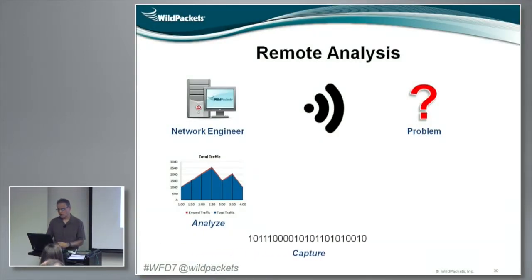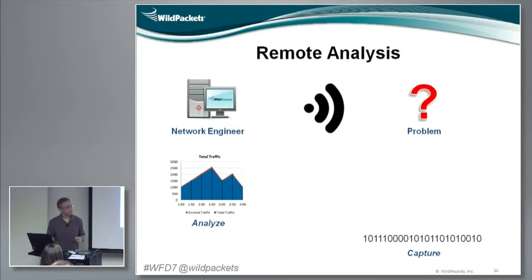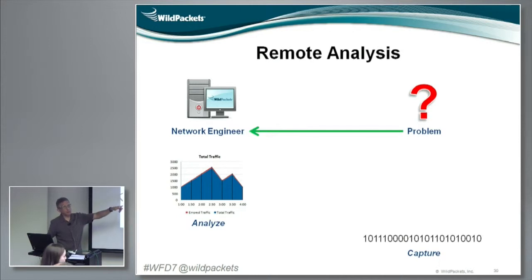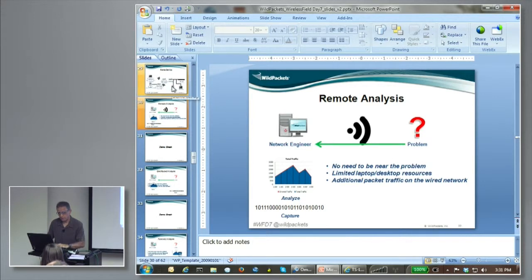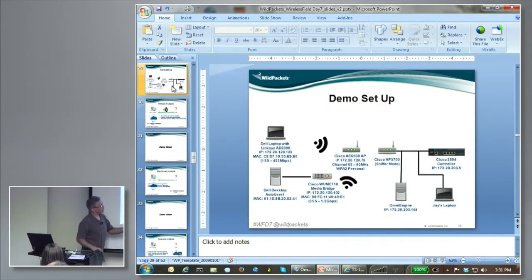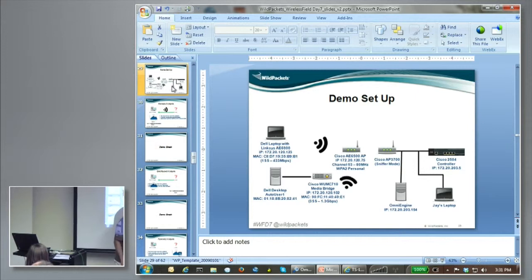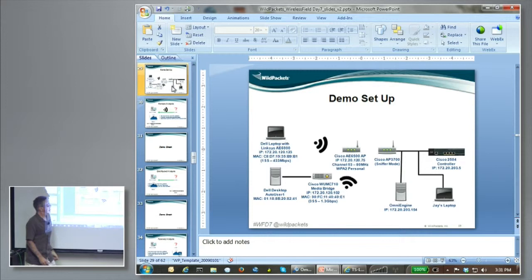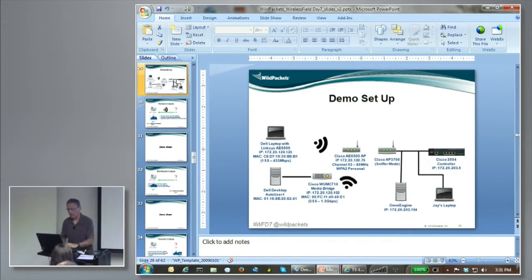In remote, all we're really going to do is move the capture over to where the problem is happening. So rather than capturing here off my AE6000s, I'll capture from the wire and from a device within the room. Instead of me capturing here with a wireless adapter, this device — the Cisco AP3700 — is actually going to capture the packets, and then I will see those packets on my laptop.